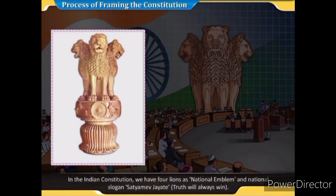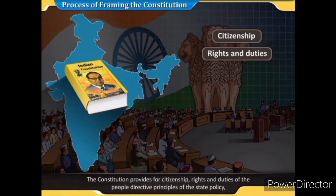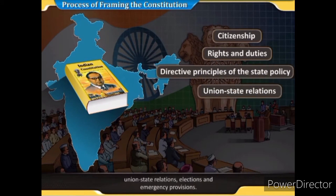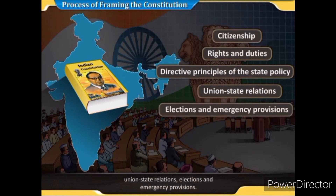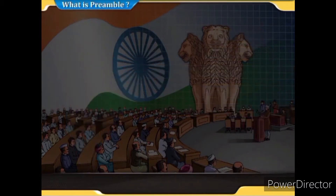In the Indian Constitution we have four lions as the national emblem and the national slogan 'Satyamev Jayate' — truth will always win. The Constitution provides for citizenship, rights and duties of the people, directive principles of state policy, union-state relations, elections, and emergency provisions. Thus the Constitution of India is the most detailed and elaborated national document.